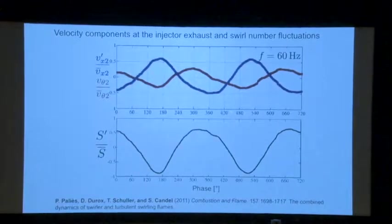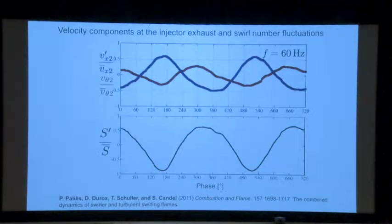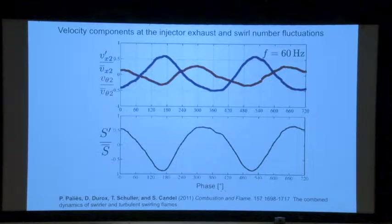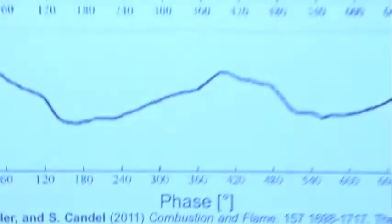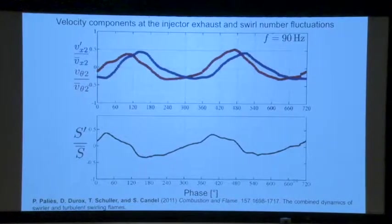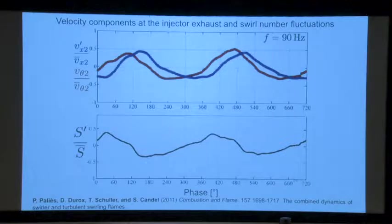This is actually verified. With measurements showing the axial velocity fluctuations and azimuthal velocity fluctuations, the swirl number deduced from that exhibits 50% fluctuations — very large-scale fluctuations of the swirl number — due to acoustic and vorticity fluctuations combining. You have a flame which is not anymore at constant swirl number. That has a big effect on stabilization and on the flame response to incoming perturbations. At 90 Hz, the situation is different — these are more or less in phase, and the swirl number doesn't exhibit such very large fluctuations.